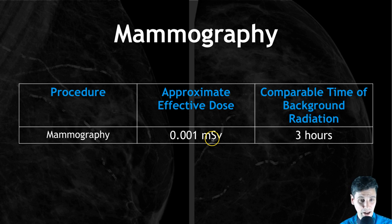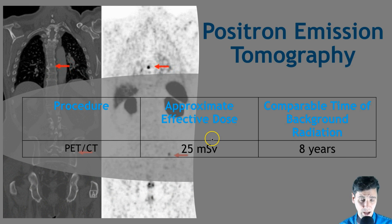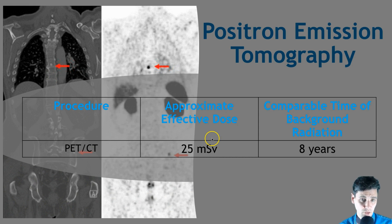Mammography has quite a low radiation dose — about 0.01 millisieverts, or about three hours of background radiation dose. Finally, one sample case for positron emission tomography — a PET scan — the radiation dose is a little bit higher than these other standard diagnostic scans, at about 25 millisieverts, which is about eight years of comparable background radiation.